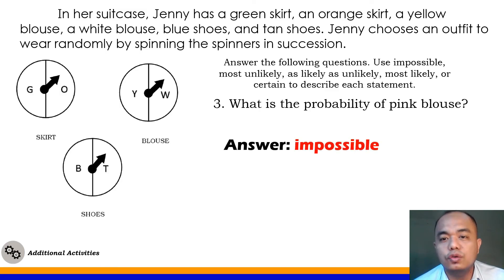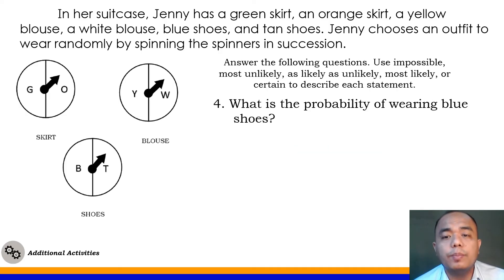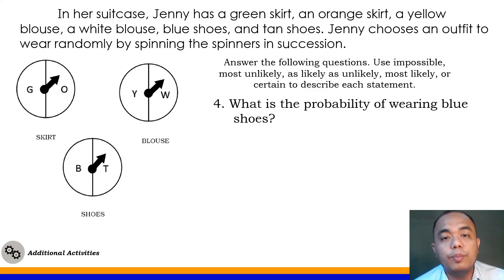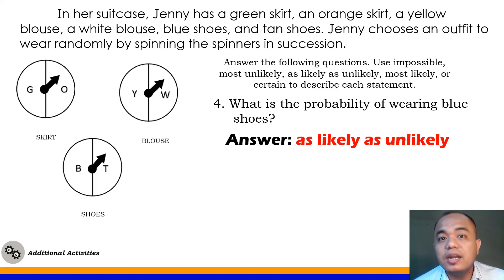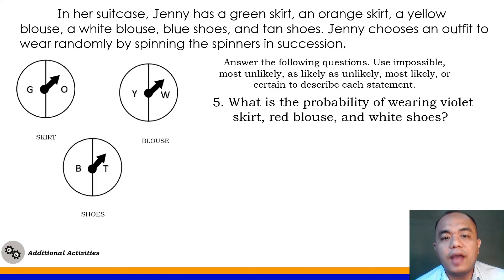Number 4: What is the probability of wearing blue shoes? Jenny has two pairs of shoes — blue and tan. So the probability of picking blue shoes is 1 out of 2. There is a 50% chance of choosing blue shoes, so the answer is as likely as unlikely.